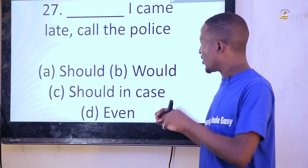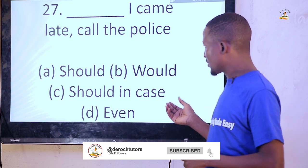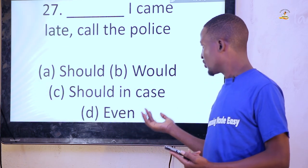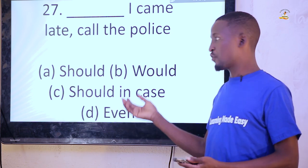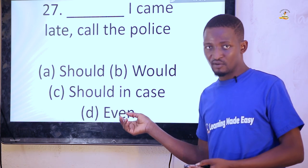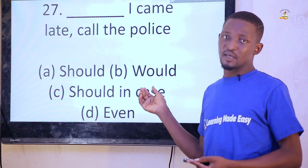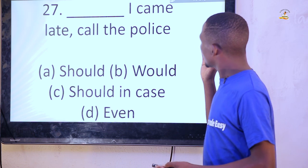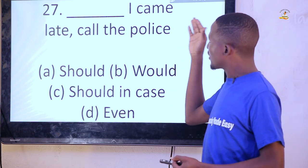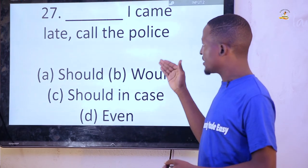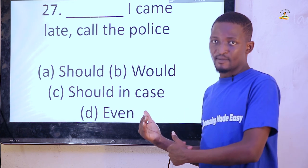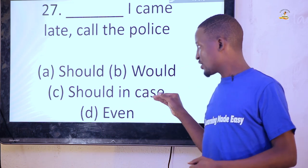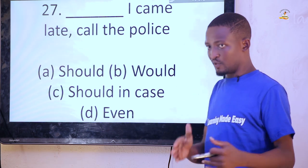'Dash I came late, call the place.' We are talking about the best word to use so it will not be tautological. Options are: 'should,' 'would,' 'should in case,' 'even.' 'Should in case' is tautological because 'should' and 'in case' perform the same function. So you say either 'should I come late, call the place' or 'in case I come late, call the place.' You cannot use both together because it becomes tautological.